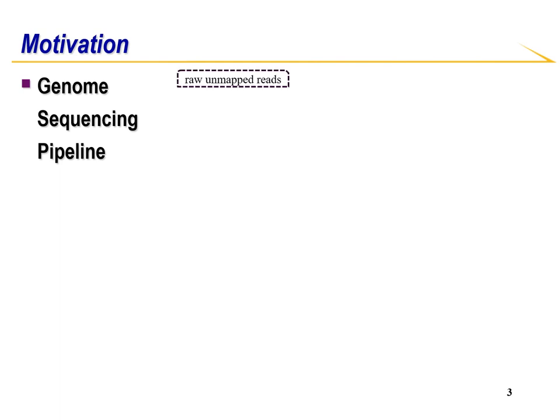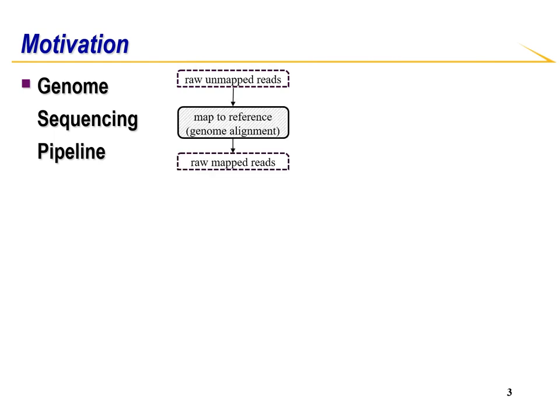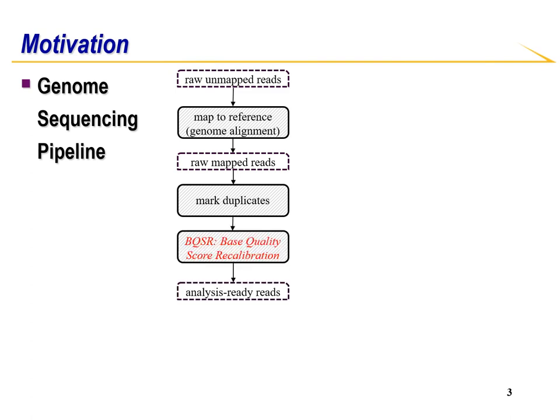The first step is to get raw unmapped reads from a sequencing machine. A read is a strand of DNA sequence. The next step is to perform genome alignment, where sequences of DNA are arranged so that they may be identified as a trait. Next comes the mark duplicates step, where identical aligned sequences are identified. The next step is to correct systematic errors introduced by the sequencing machine, also known as base quality score recalibration. This makes up the data preprocessing pipeline.